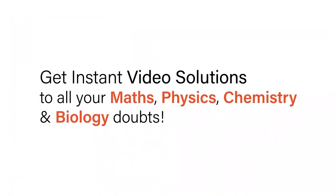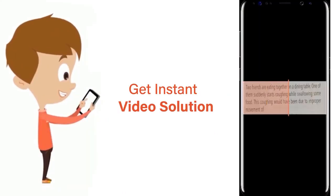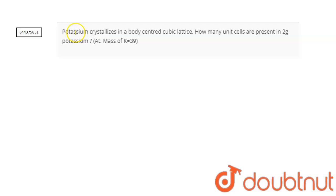With Doubtnet, get instant video solutions to all your maths, physics, chemistry, and biology doubts. Just click the image of the question, crop the question, and get instant video solution. Download Doubtnet app today. Hello everyone, our question is: potassium crystallized in a body-centered cubic unit lattice. How many unit cells are present in 2 grams of potassium?